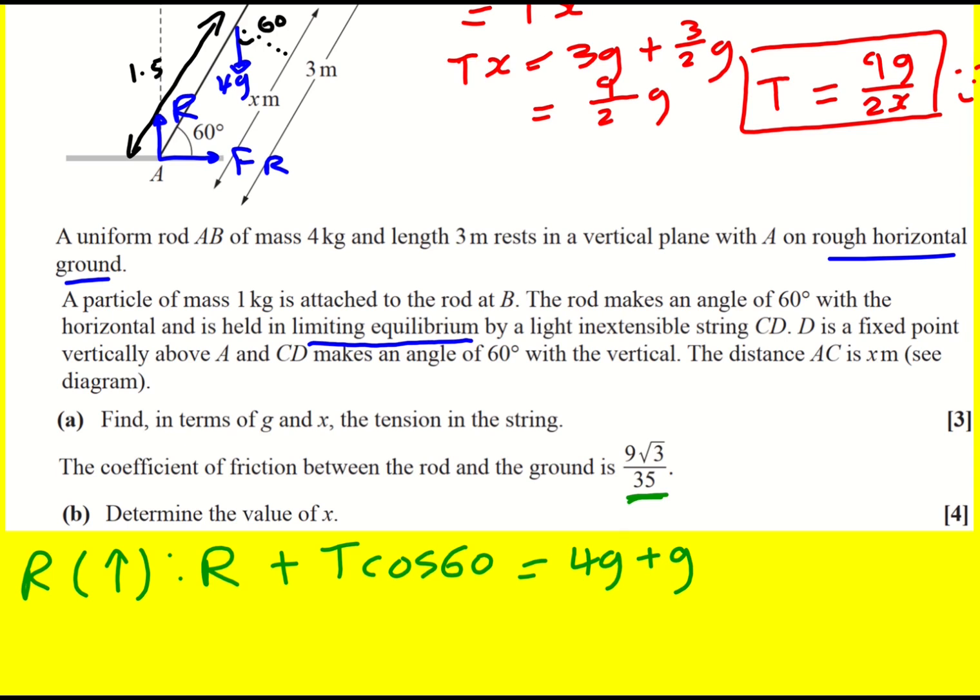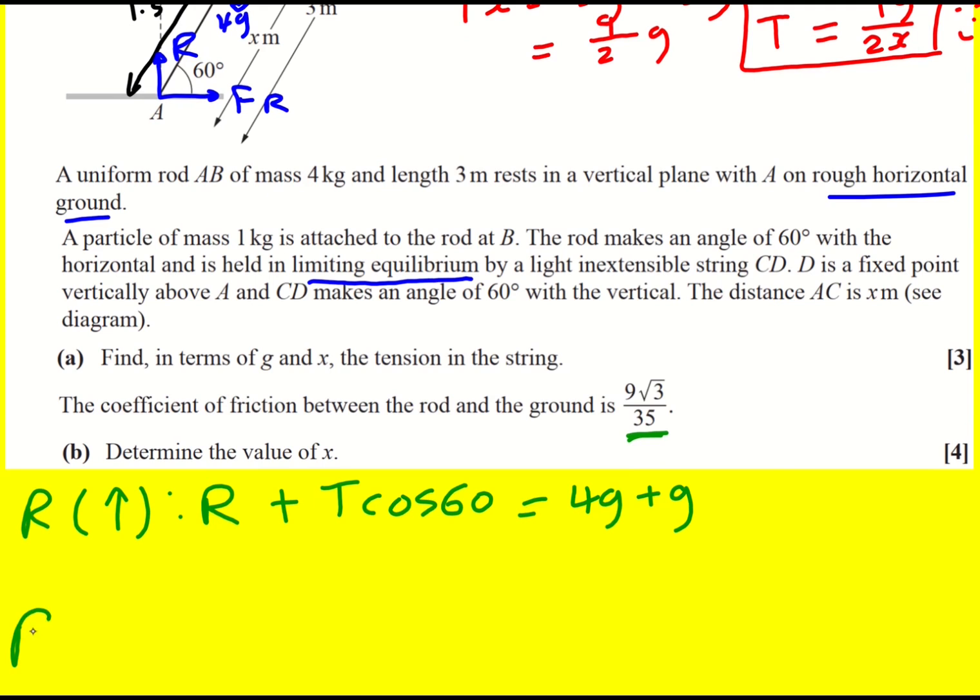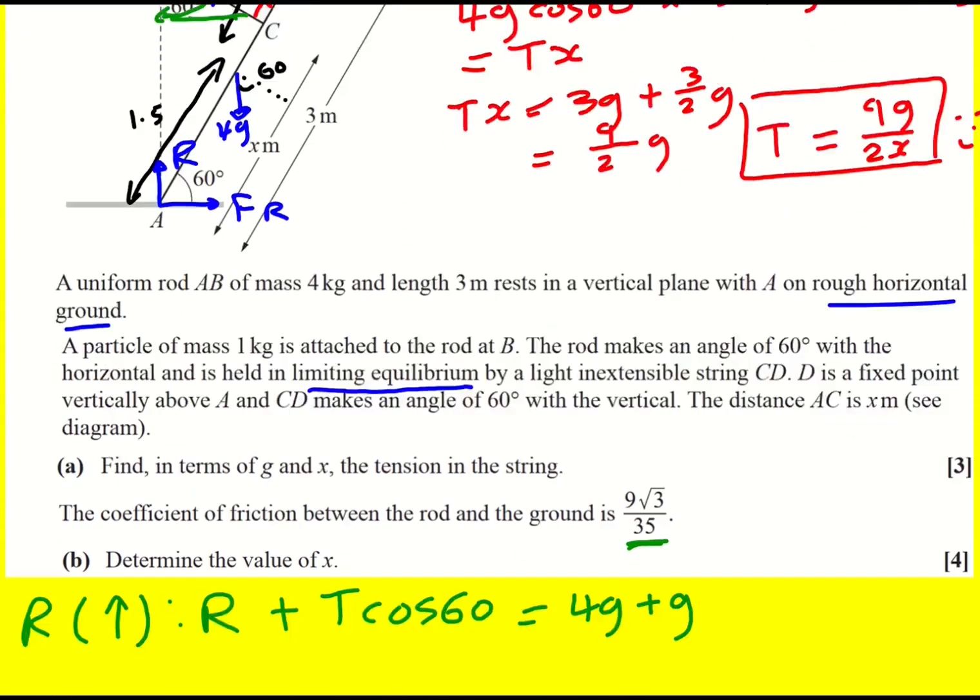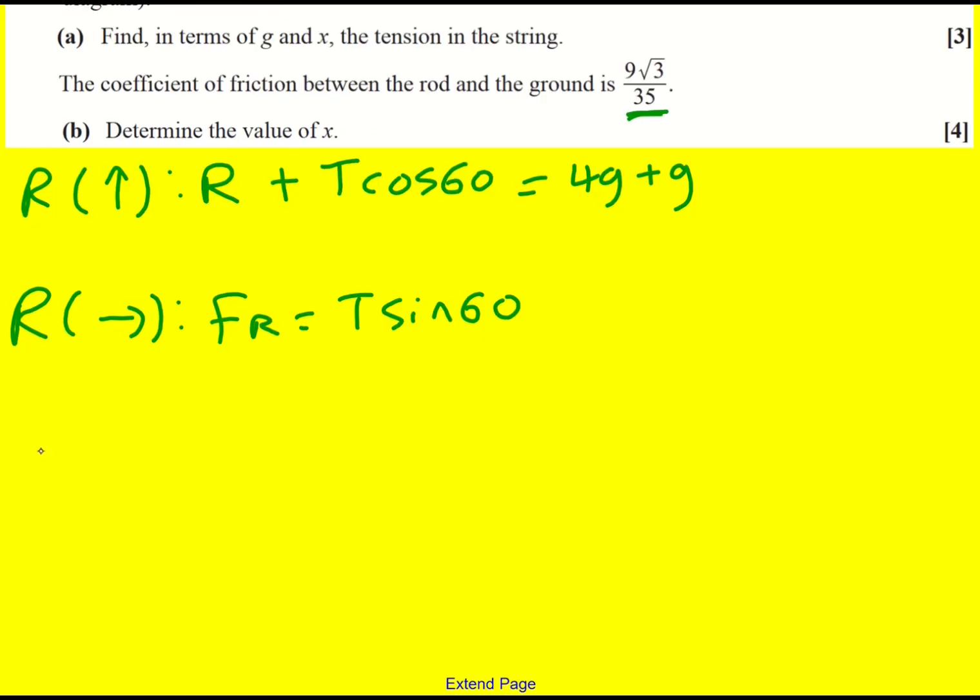Now I could, let's just hold it there for a moment, and deal with the horizontal forces. To the right I've got F_R, and to the left I've got T sin 60. And then remember, we've got F_R, it's in limiting equilibrium, it's going to equal mu R.